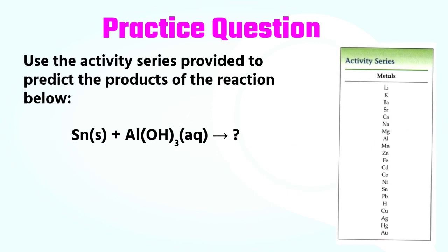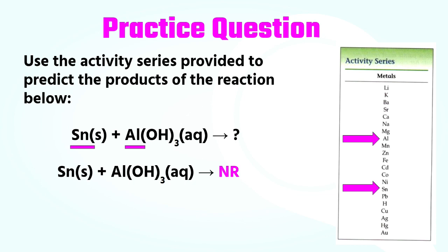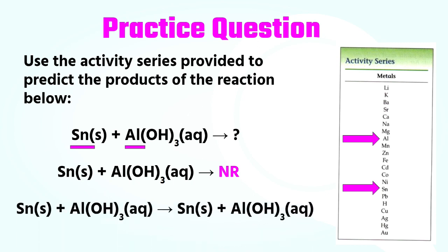On to the next question: use the activity series provided to predict the products of the reaction below. The single element is a metal, tin. We then find the metal in the compound, which is aluminum. We go to our activity series and compare their positions — aluminum is actually higher up on the list than tin is, which means aluminum is more active. So is tin going to be able to replace aluminum? No, it's not, because tin is less active being further down on the list. We would simply state that there is no reaction, abbreviated NR. Another way of writing this is to write the same reactants on the product side, because nothing really happened — we have the same exact stuff we started with.